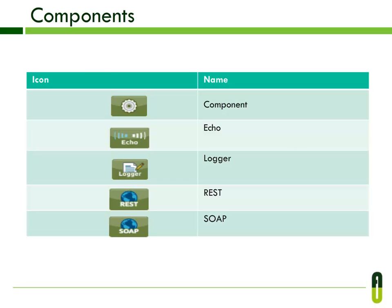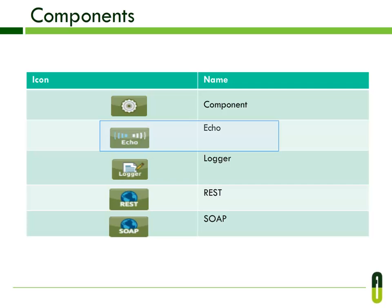The Component is used to invoke a Java component and specifies a Java class as the service component, or configures a reference to an implementation in a container such as Spring. The Echo component echoes a message payload to the console. The Logger component performs logging using an expression that determines what should be logged depending on the logging level.